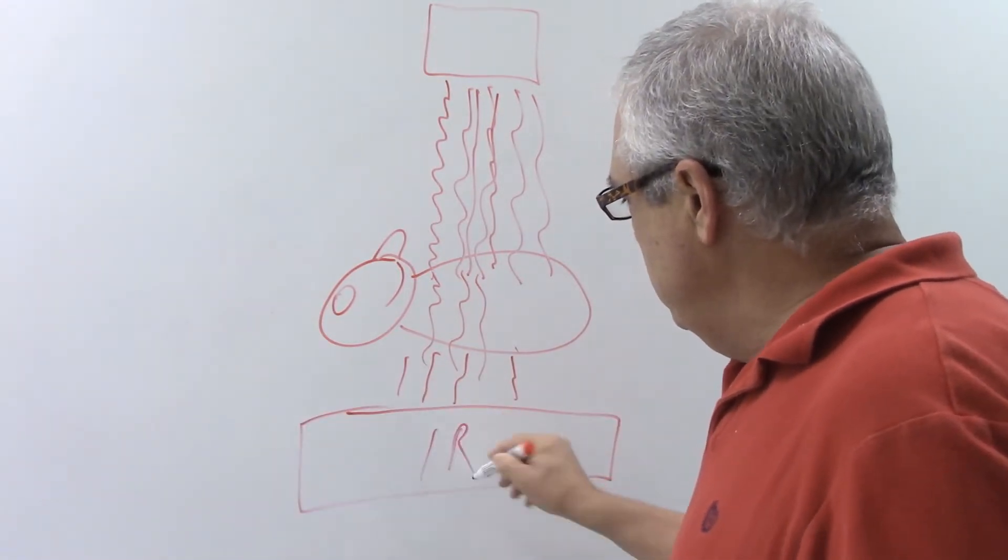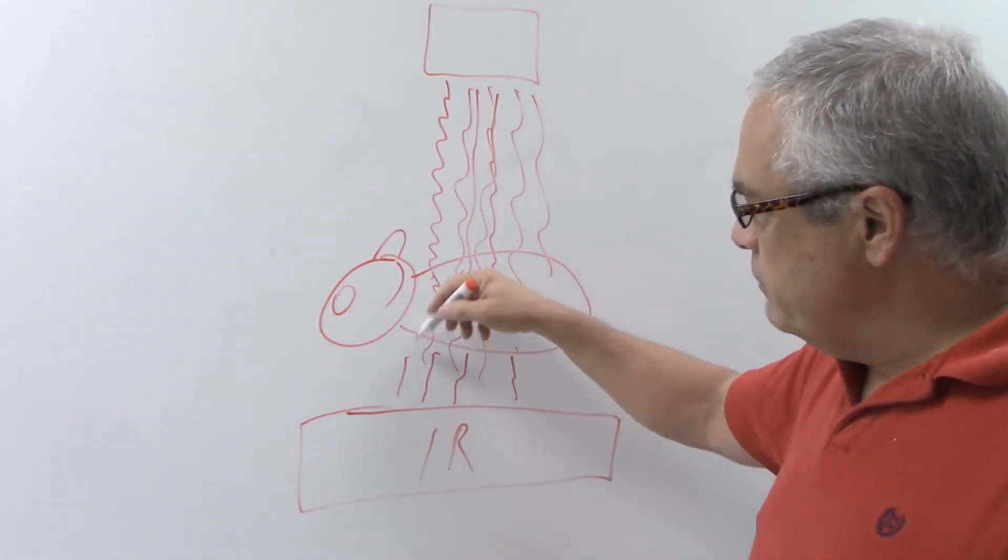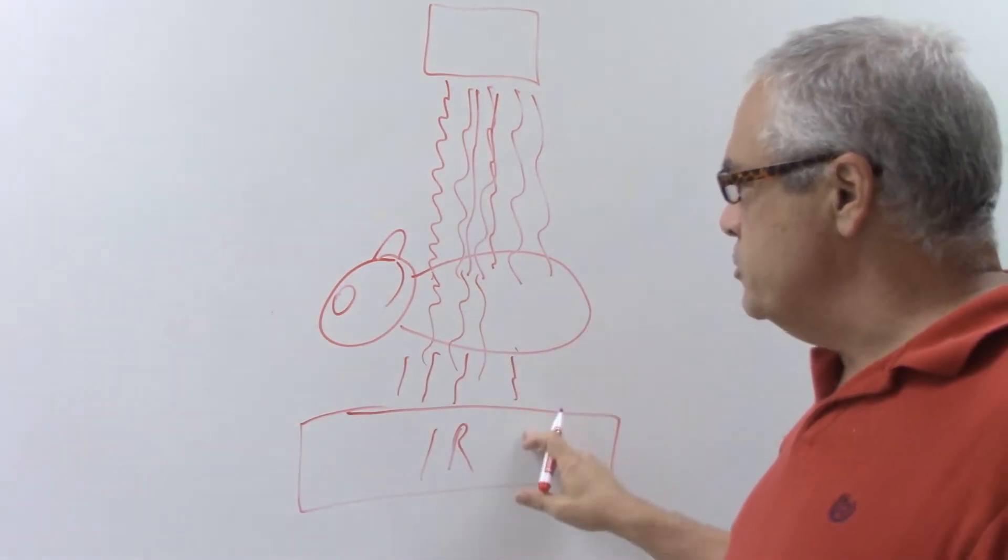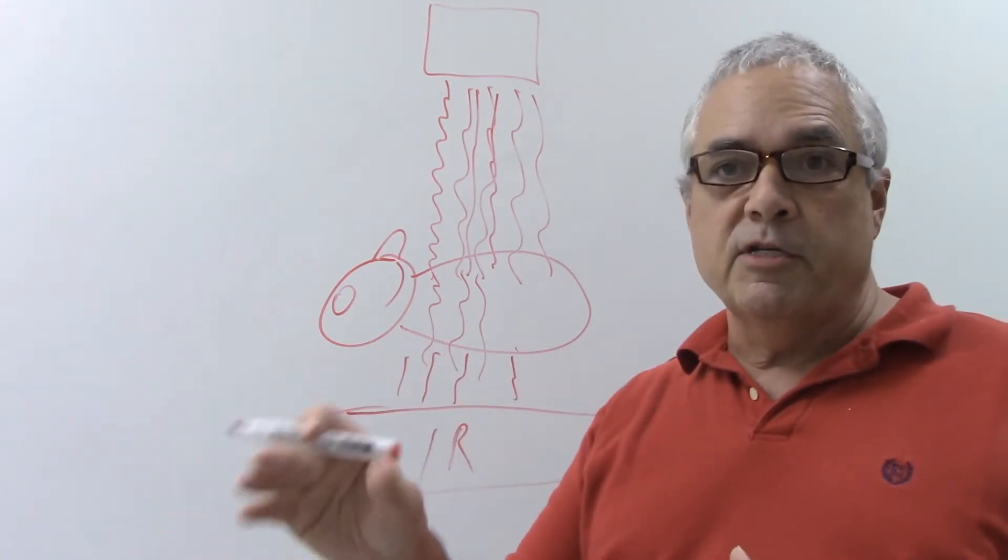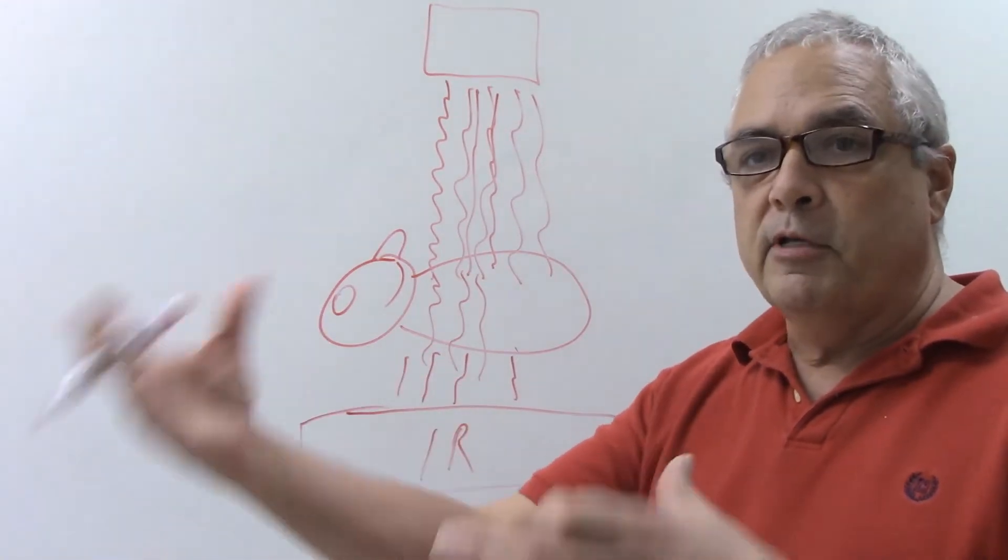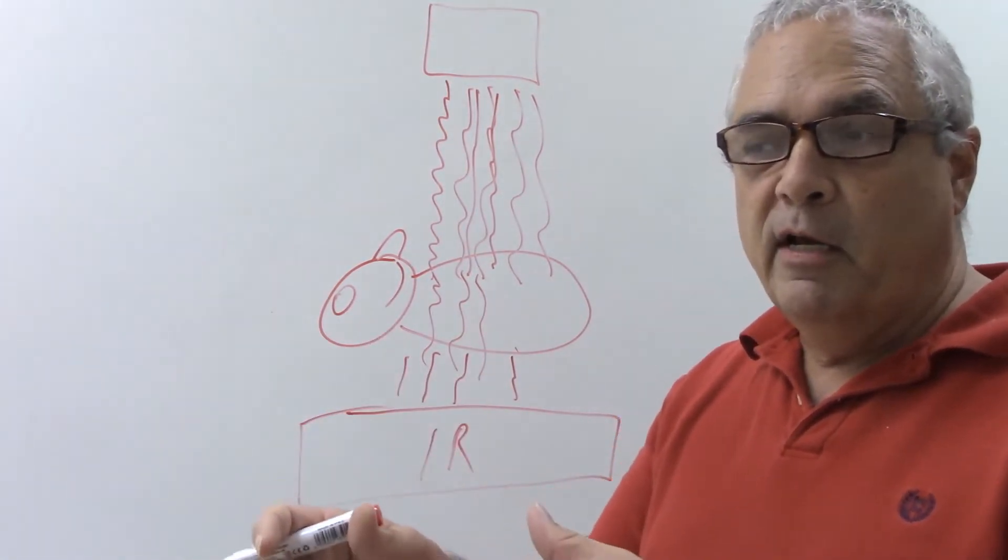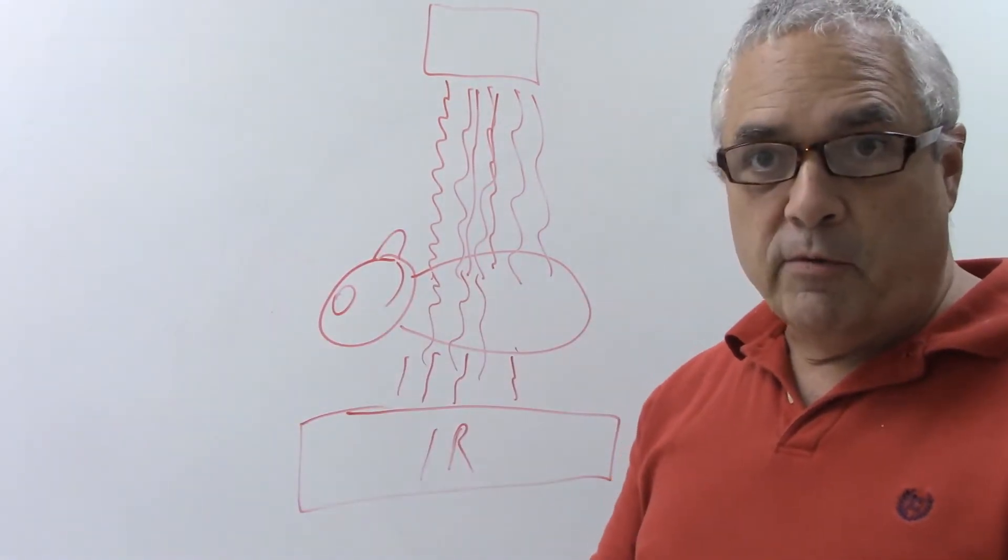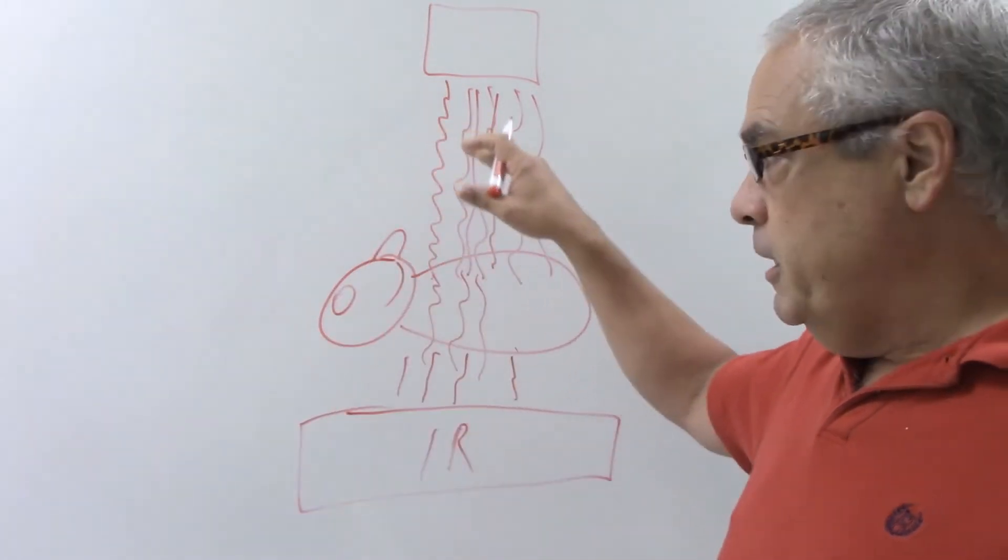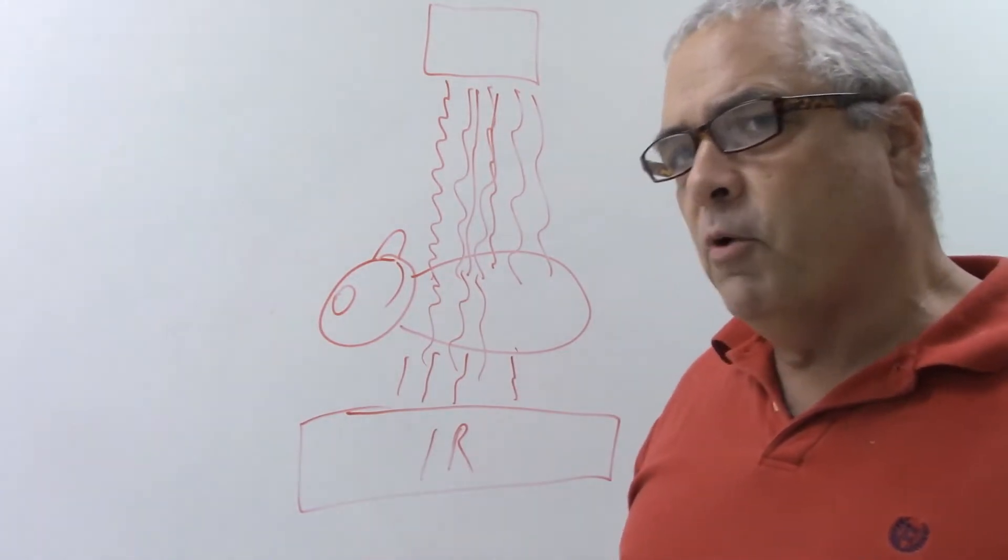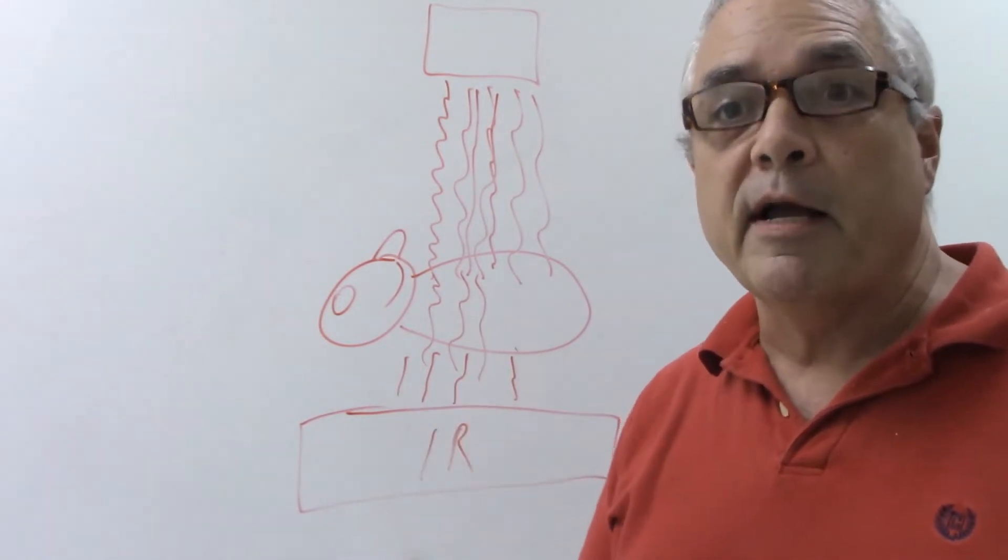And here's your image receptor, the latest technology. This is my thin image receptor here. So we're going to have some photons coming out and interacting with the image receptor. But I'm going to have a really, even with a CR system or a DR system, I'm going to have a really pronounced difference between my blacks and whites.